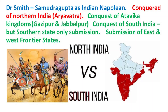When Samudragupta became the ruler or king of the Gupta Empire, he started a series of conquests and expeditions and conquered the whole of the Indian subcontinent. This is why Dr. Smith has given him the title of the Indian Napoleon. He first conquered Northern India, and the kingdoms in Northern India were called Aryavatra.